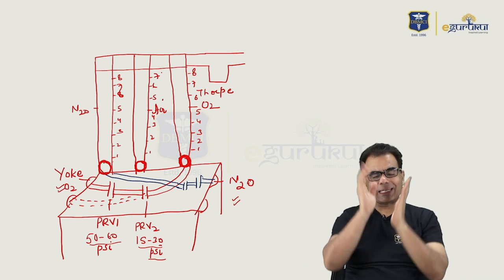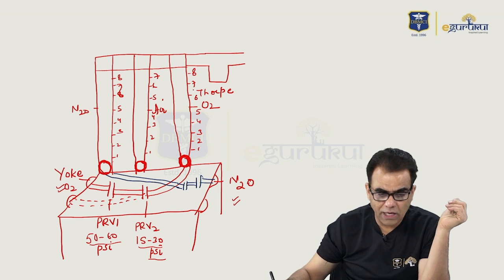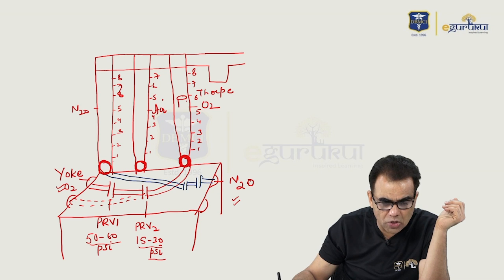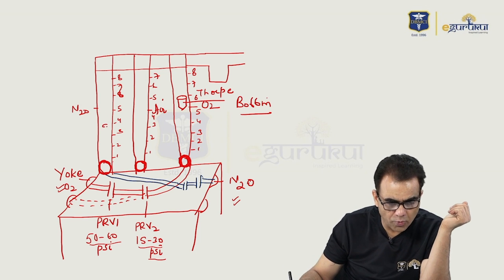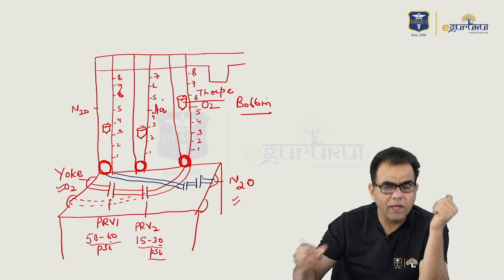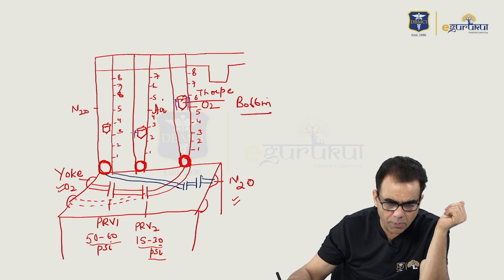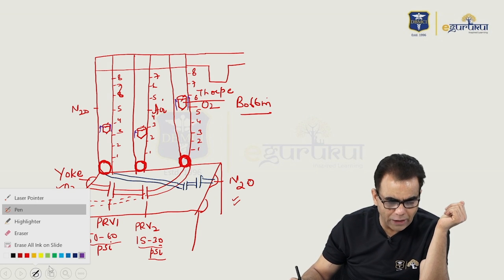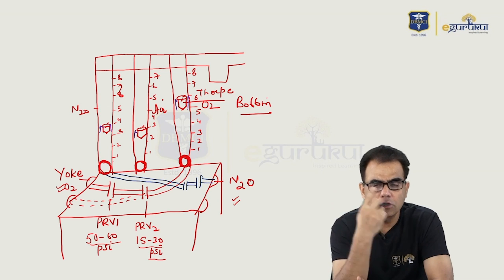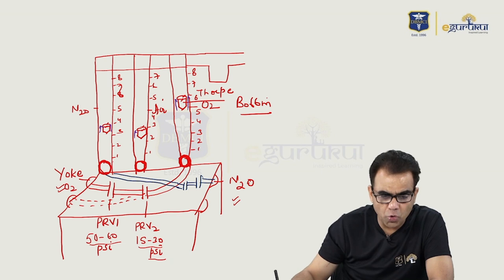These are glass tubes, but still you cannot see the gas flowing through them, so you have to be sure gases are in continuous flow. For that, they have placed an aluminium structure into each tube called a bobbin. There will be a bobbin for oxygen, for nitrous oxide, and for air. In its upper rounded part, there are cuts. When gas passes all around this bobbin, due to these cuts, it makes the bobbin rotate. If the bobbin is continuously rotating, that means gas flow is continuous.